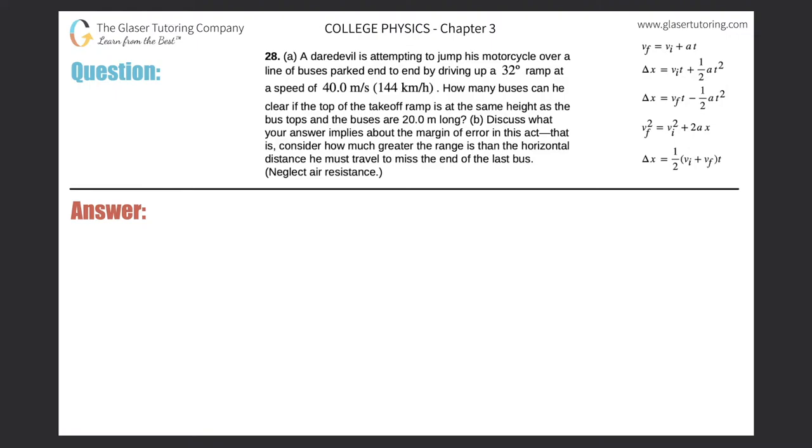Number 28, letter A. A daredevil is attempting to jump his motorcycle over a line of buses parked end-to-end by driving up a 32-degree ramp at a speed of 40 meters per second. How many buses can he clear if the top of the takeoff ramp is at the same height as the bus tops and the buses are 20.0 meters long?